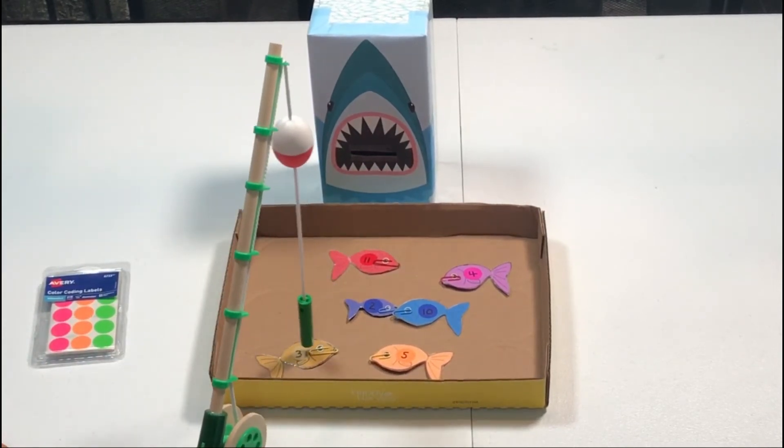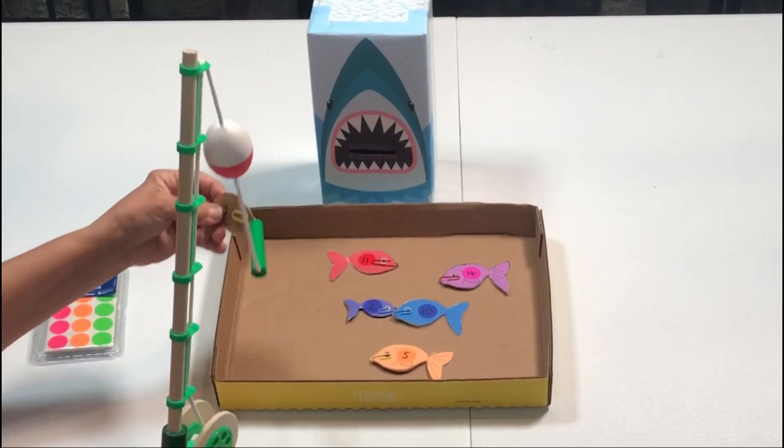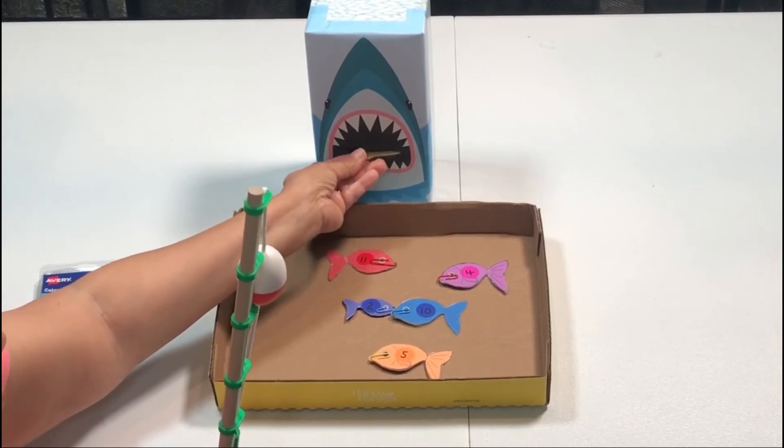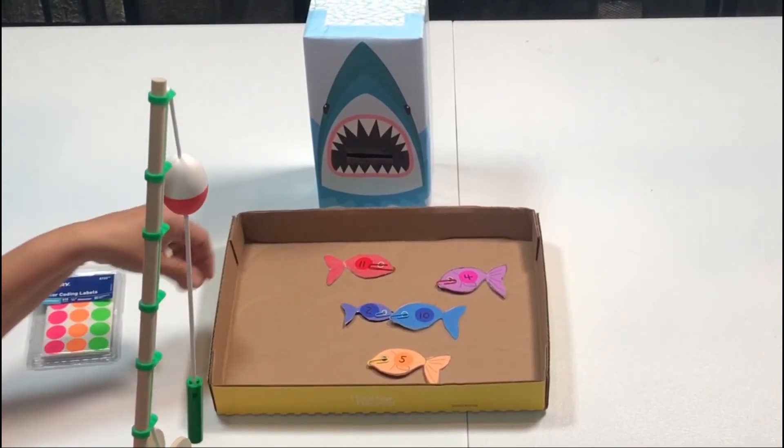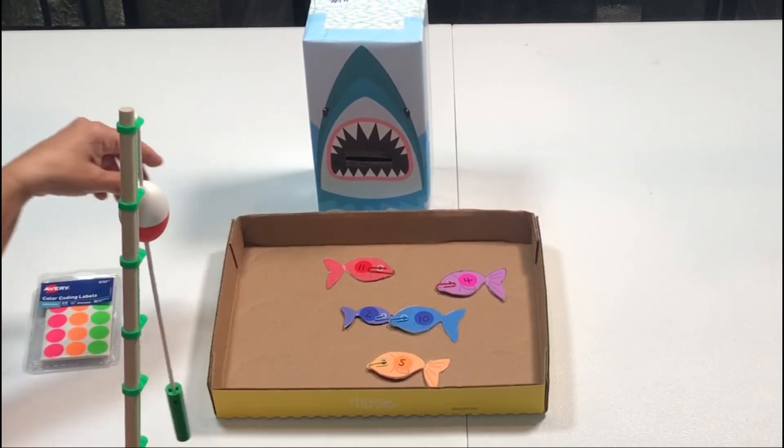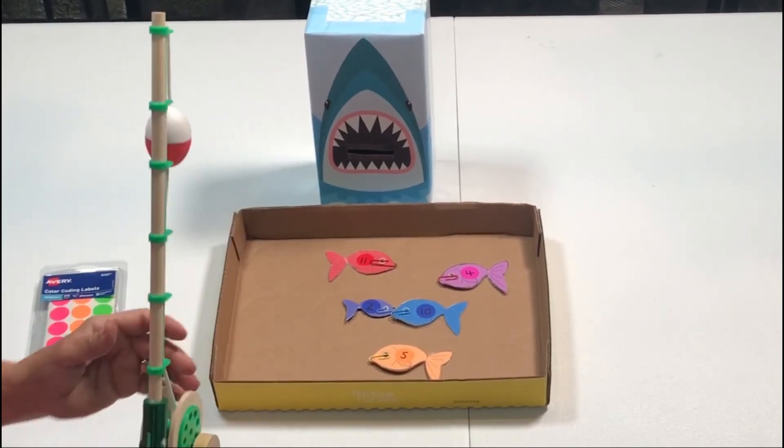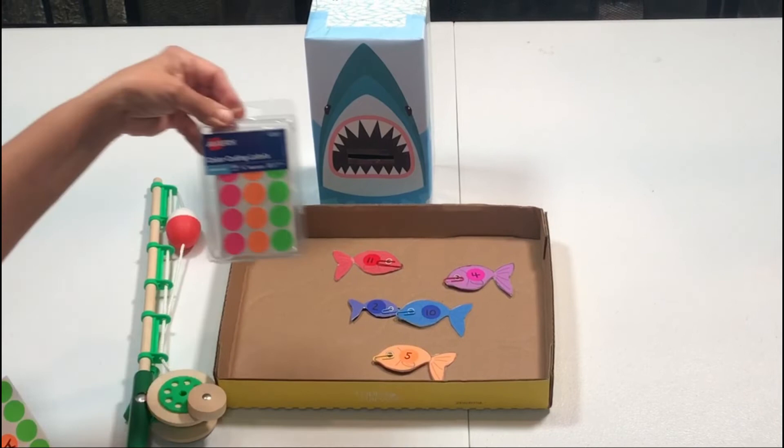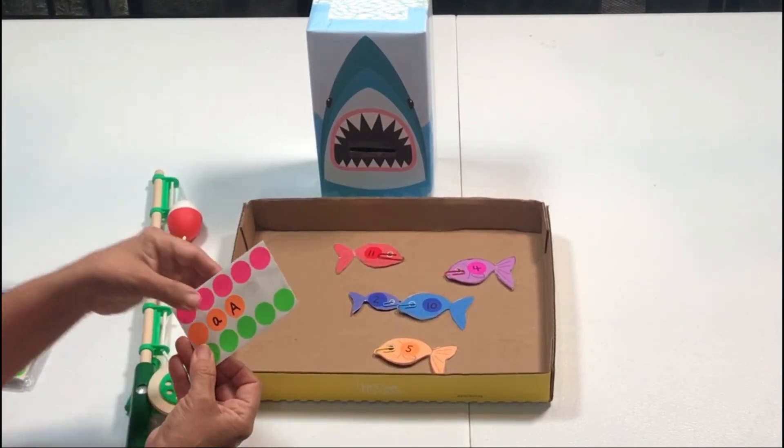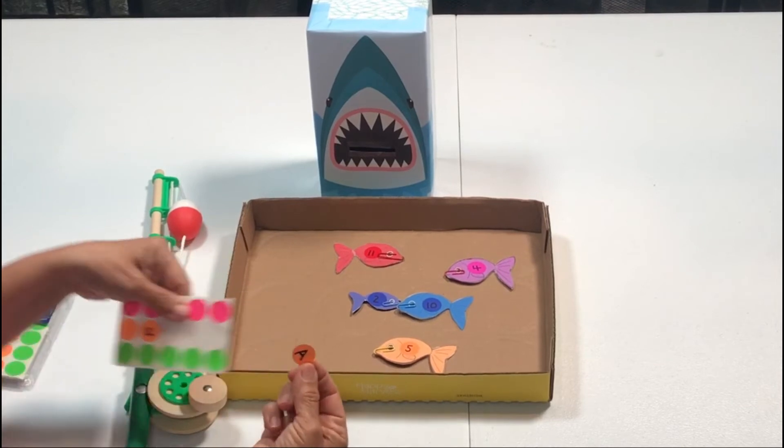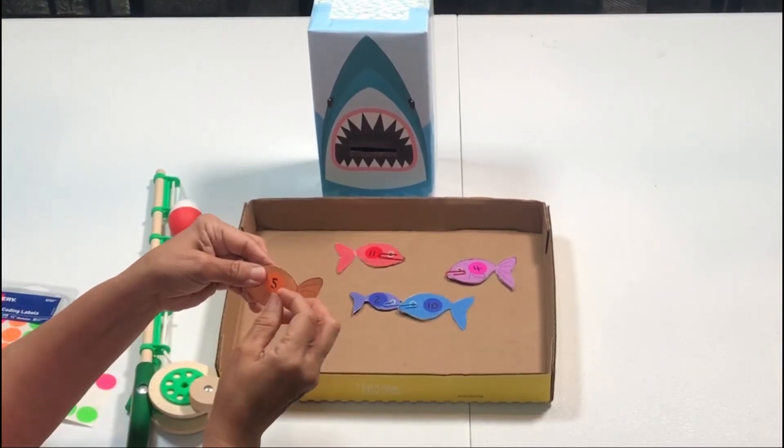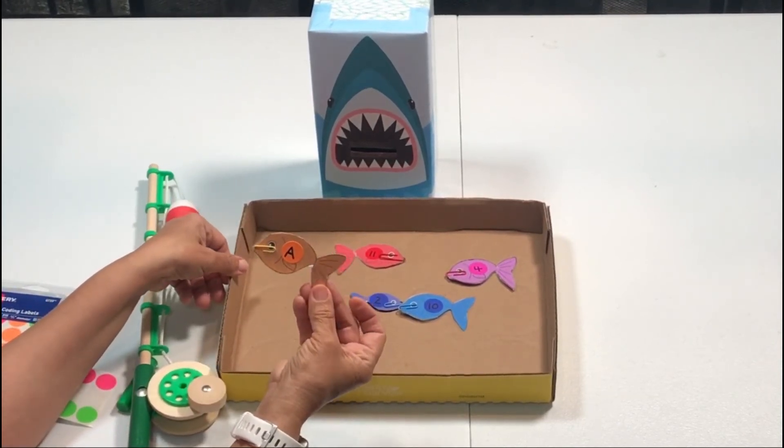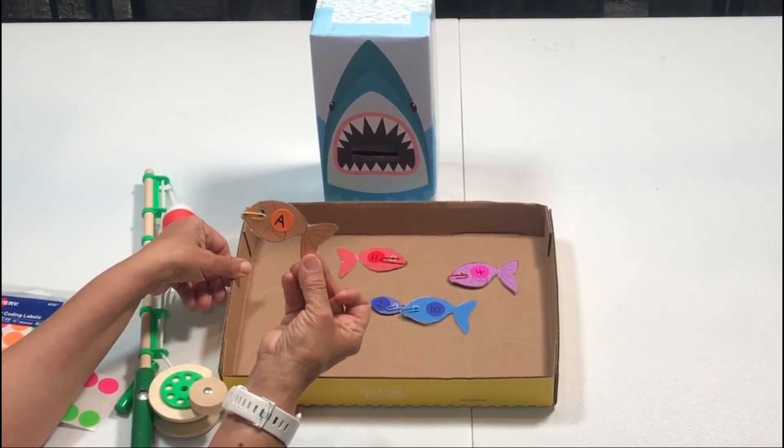I'm going to pick up another fish. This is the number three and we're going to feed the shark. Super fun way to practice number recognition. You can also do maybe letters the next time. I'm using this color coding labels so you can just write the letter. I'll go ahead and link the page with the fish and with the shark.